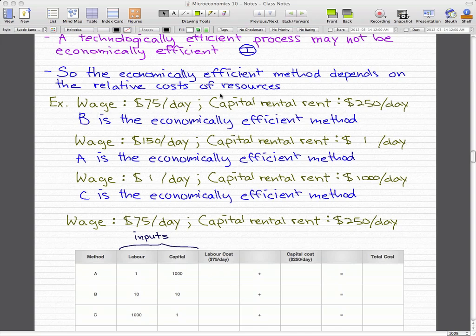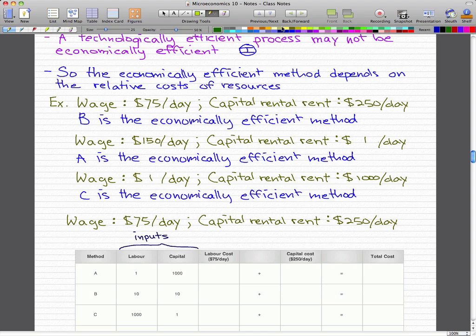When the wage is $75 a day and the capital rental rent, or the capital rental rent doesn't make any sense at all. Just give me a second. Let me figure out why this is saying that. So yeah, this is not capital rental rent and this is actually capital rental rate. So let's just do some on-screen fixes. Capital rental rate. Sweet! So yeah, let's get back on this. So when the wage rate is $75 a day and the rental rate is $250 a day, then method B is the economically efficient method.